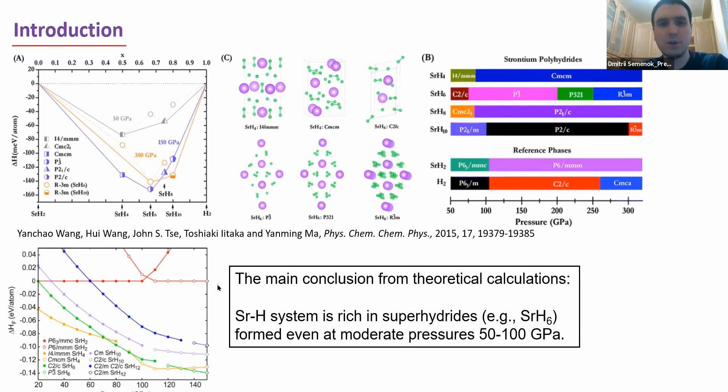Actually, in my presentation I will show that the main conclusion from those theoretical calculations is correct, and strontium hydrogen system is very rich in superhydrides, for example strontium H6, and formed even at quite moderate pressure, about 50-100 GPa.